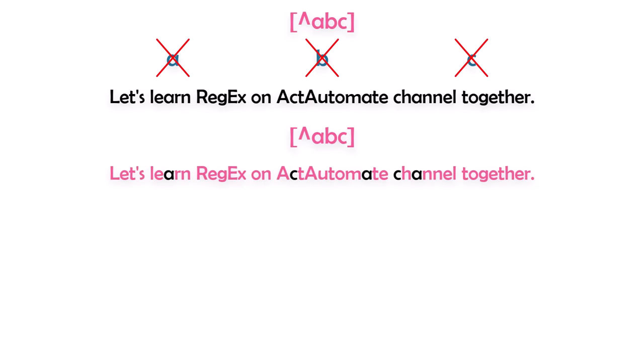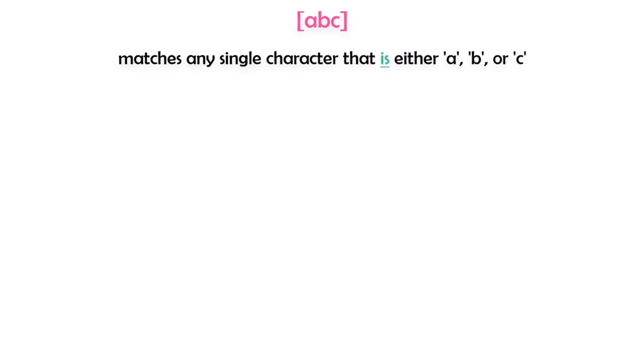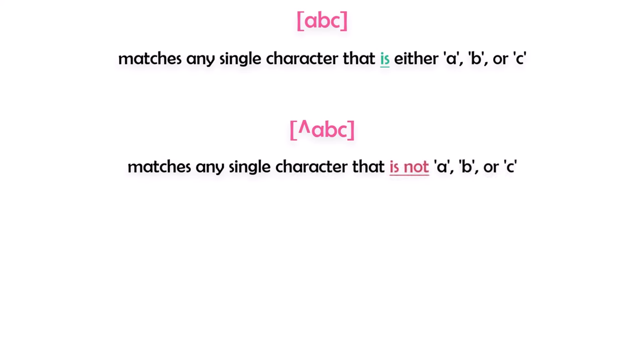The result will be each character except A, B, and C. In summary, if you want to get a specific text from a large text except specific characters, you can use this pattern — you only have to set the caret and then the characters you don't want. The first pattern matches any single character that is either A, B, or C, while the second pattern matches any single character that is not A, B, or C.